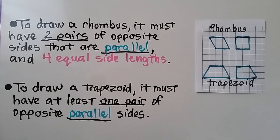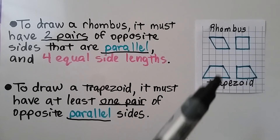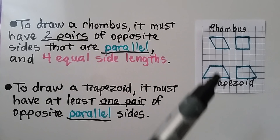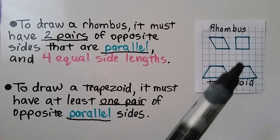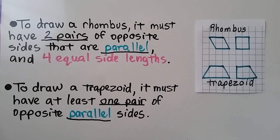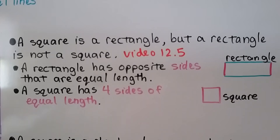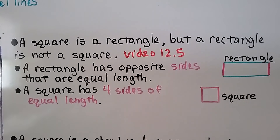To draw a trapezoid, it must have at least one pair of opposite parallel sides. Here we have one pair, and in this one we also have one pair that are parallel and opposite each other. A square is a rectangle, but a rectangle is not a square — we learned that in 12.5 as well.